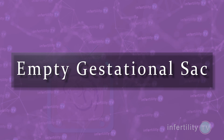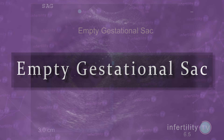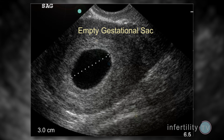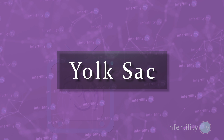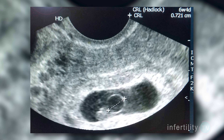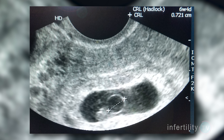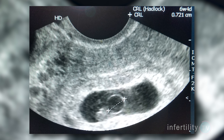We call it an empty gestational sac if there are no other structures inside — in other words, only fluid is seen. The next structure that becomes visible is called the yolk sac. This appears as a white ring located inside the gestational sac. The diameter of the yolk sac can also be measured.